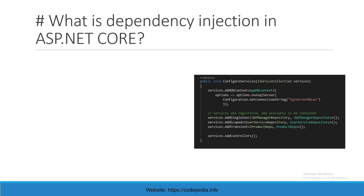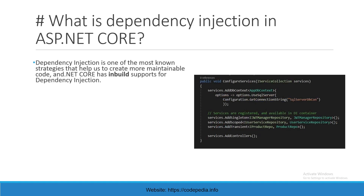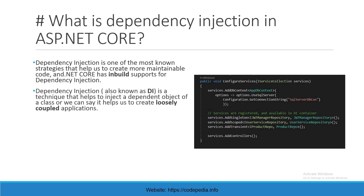What is dependency injection in ASP.NET Core? This is one of the most commonly asked questions. Dependency injection is one of the most common strategies that helps us create more maintainable code, and .NET Core has built-in support for dependency injection. Dependency injection, also known as DI, is a technique that helps to inject a dependent object of a class, or we can say it helps us to create loosely coupled applications.